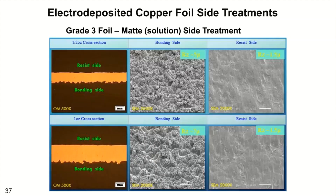I want you to see that in this case the rough side is down. You'd have better adhesion with this, and as different coppers come in different thicknesses — a half ounce or a one ounce cross section — there's a bonding side and a resist side, and you can see that the surface roughness is depicted by that.